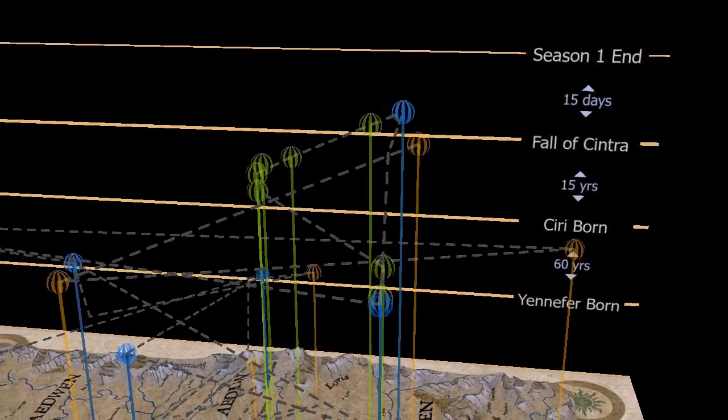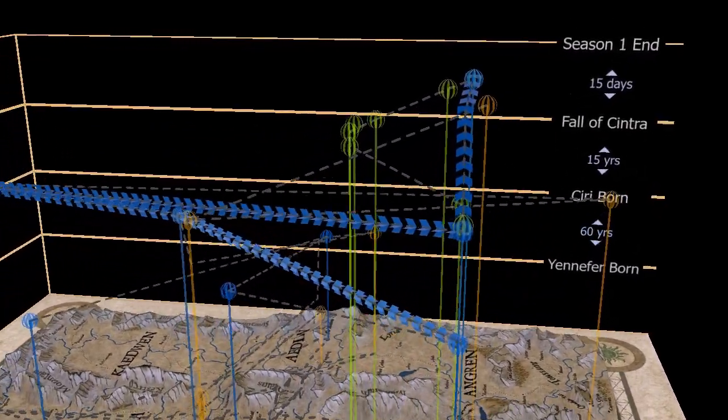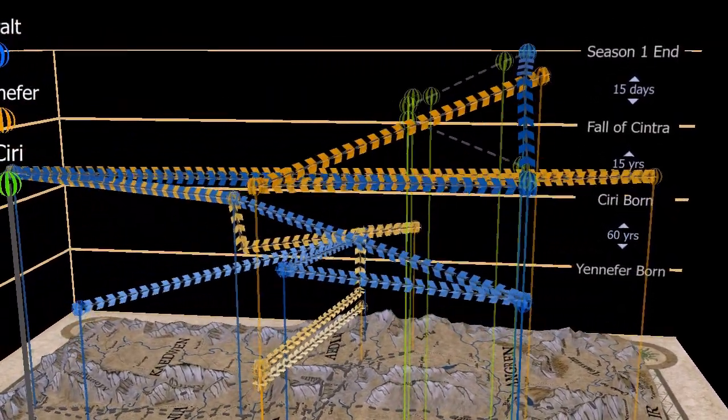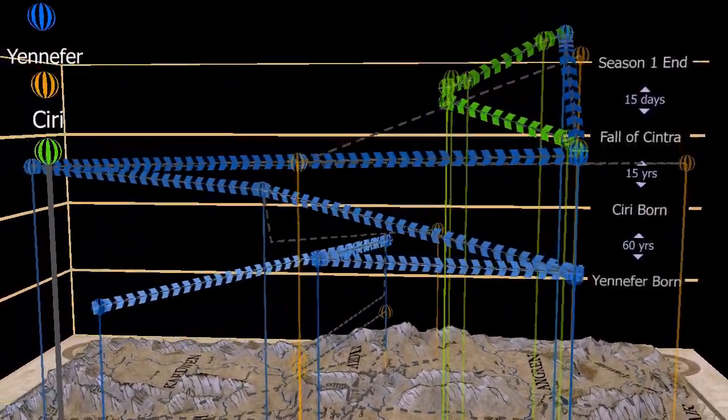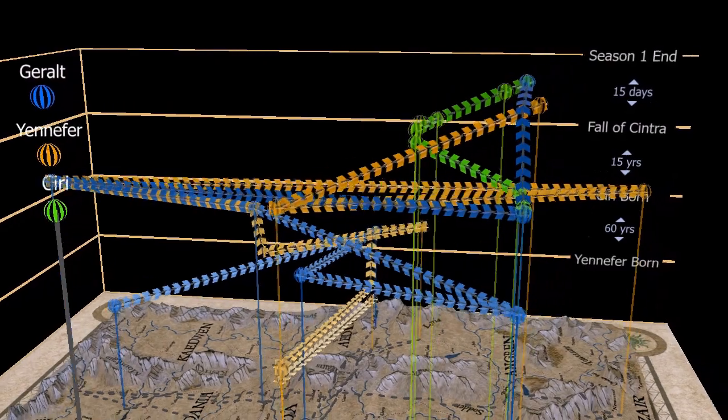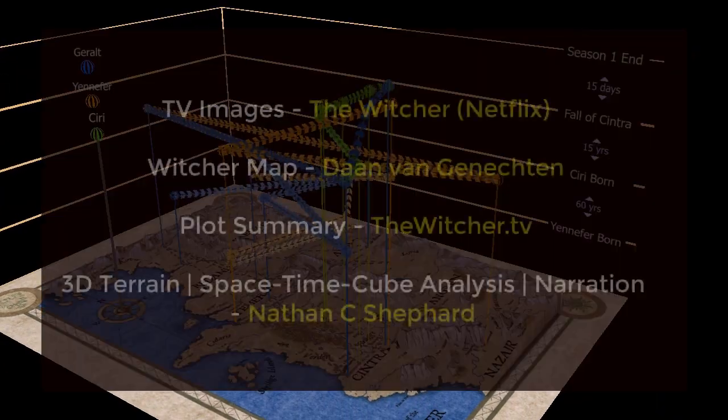And there you have it. The characters move through the world at their own pace, but each had a distinct, linear path, and sometimes those paths intersected. I hope this analysis was useful for you. Word on the street is that Season 2 won't need a space-time cube, but you never know. I say, bring it on.